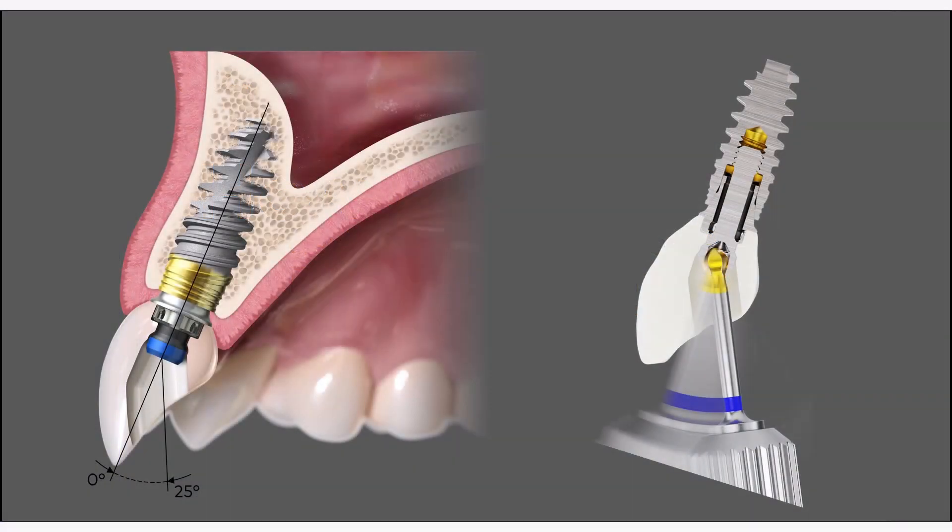In this video, you will learn how to design a Novo Procera Full Contour Zirconia Screw Retained Crown with Angulated Screw Channel.